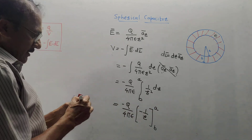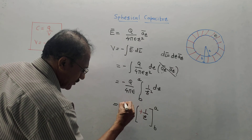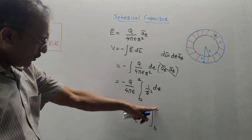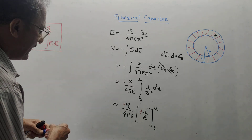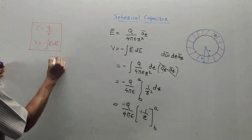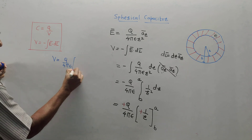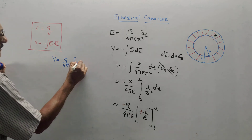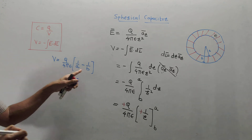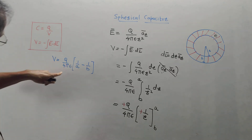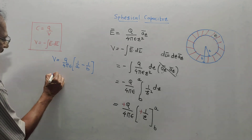We have a minus sign appearing twice, so they combine to give a positive. Applying the limits — upper limit first, then lower — the voltage equation becomes V = q/(4πε) × (1/a − 1/b). This is the equation for voltage.